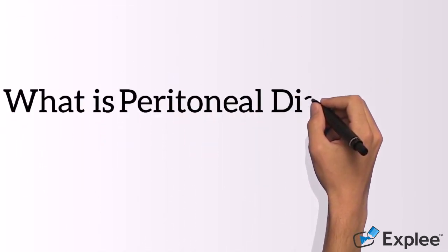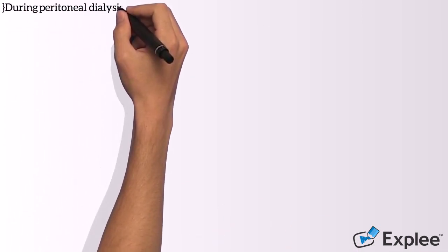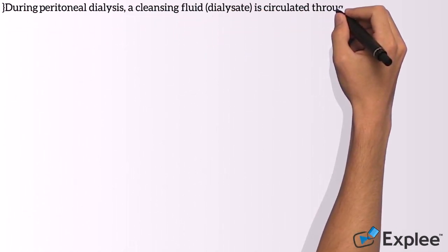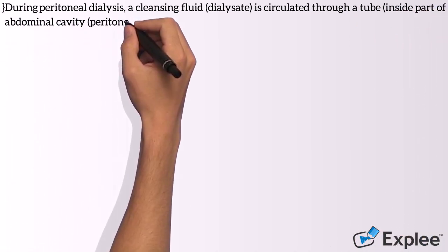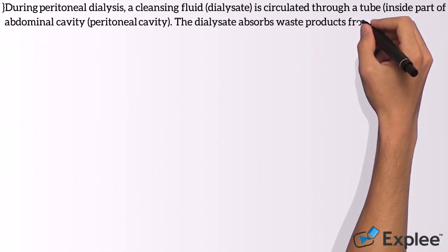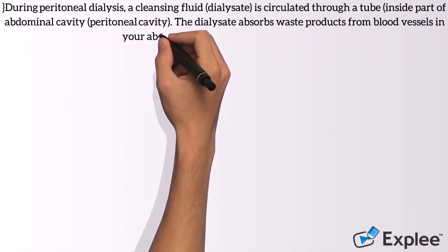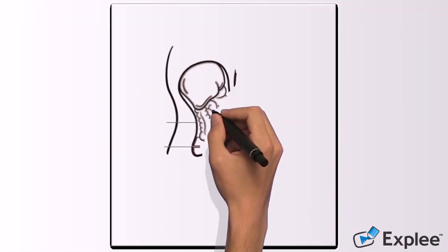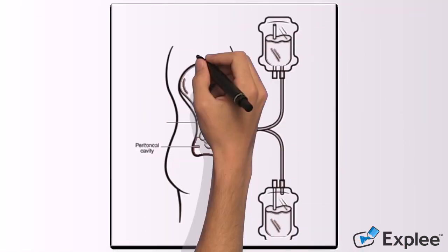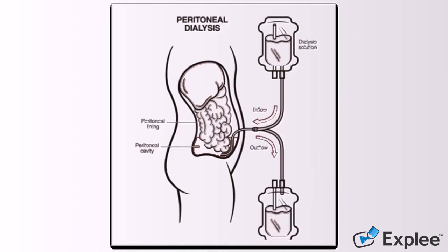What is peritoneal dialysis? During peritoneal dialysis, a cleansing fluid, dialysate, is circulated through a tube inside part of the abdominal cavity, the peritoneal cavity. The dialysate absorbs waste products from blood vessels in your abdominal lining.